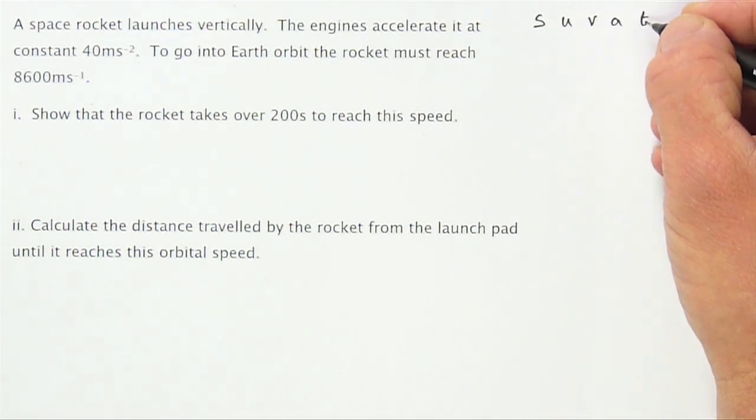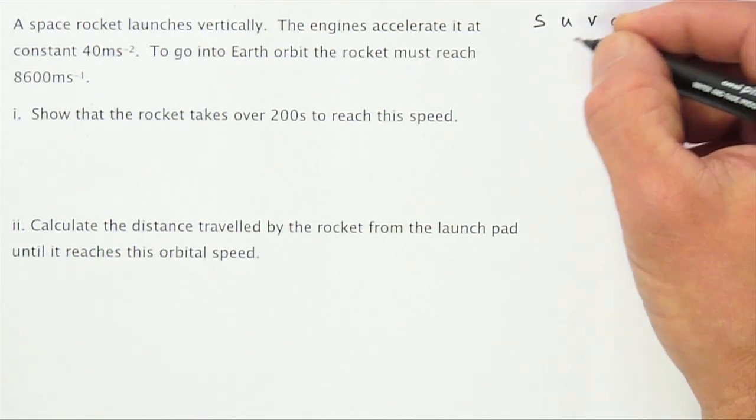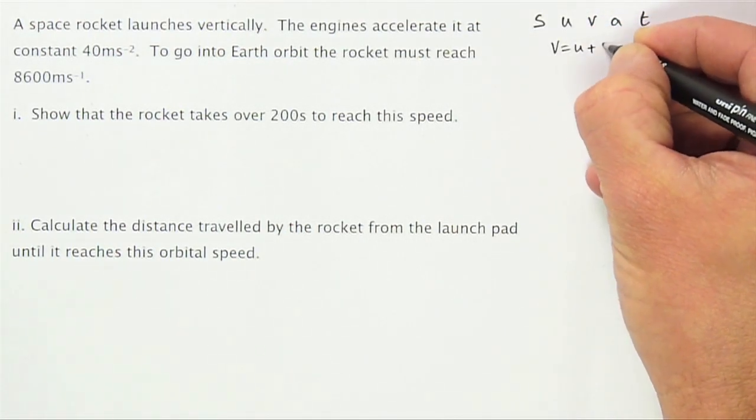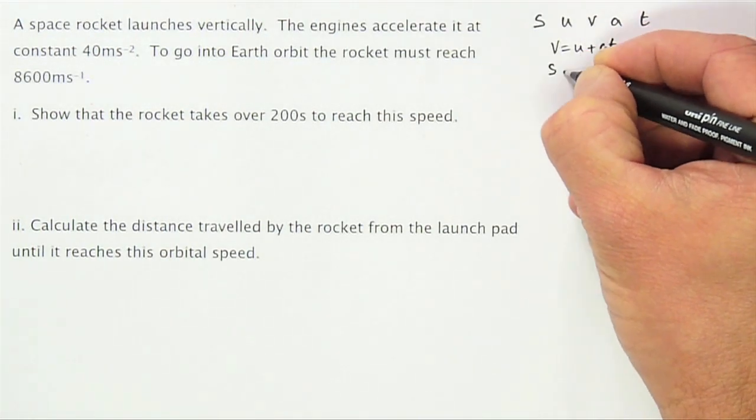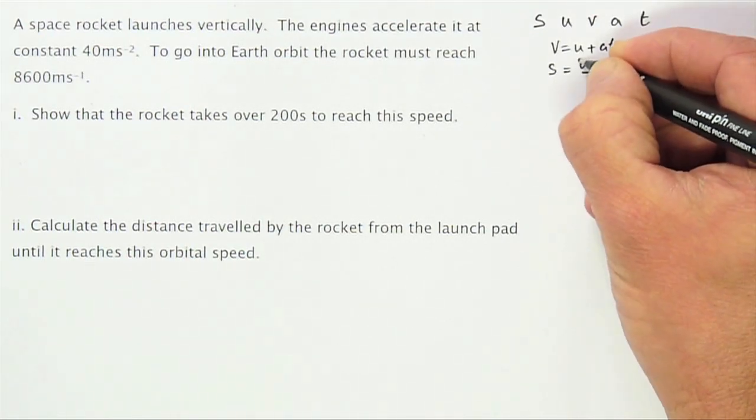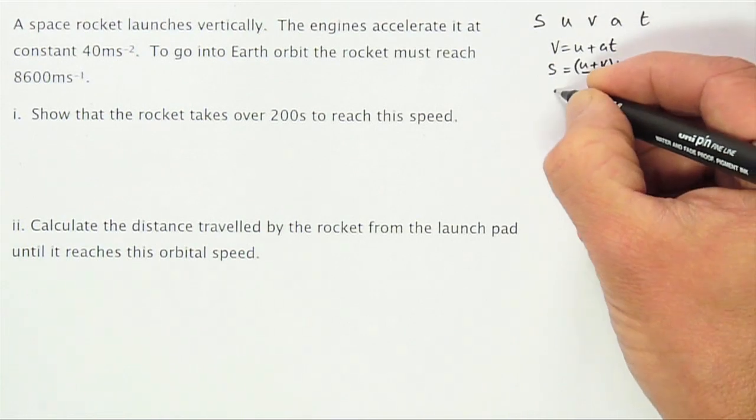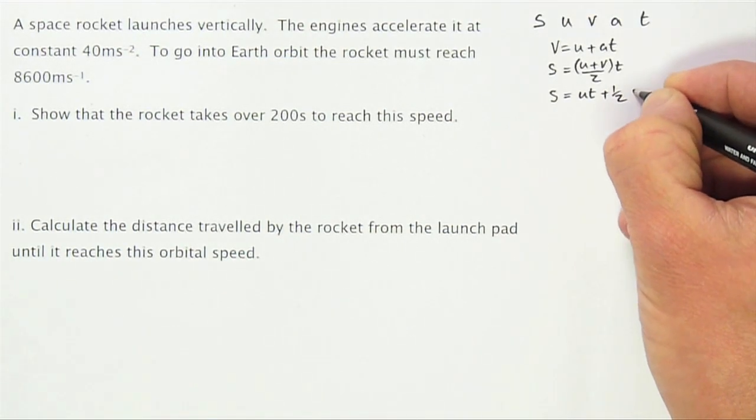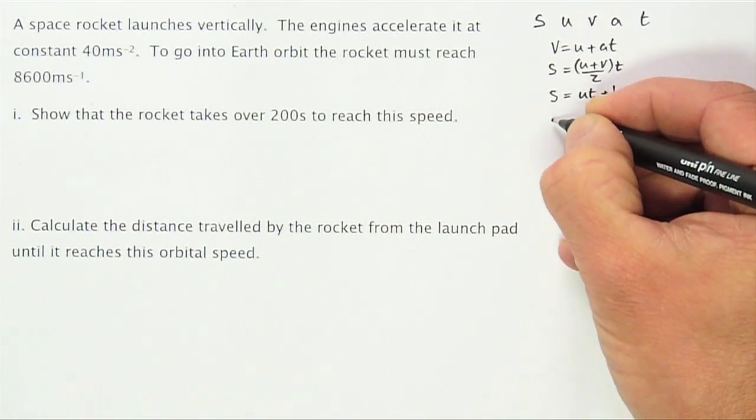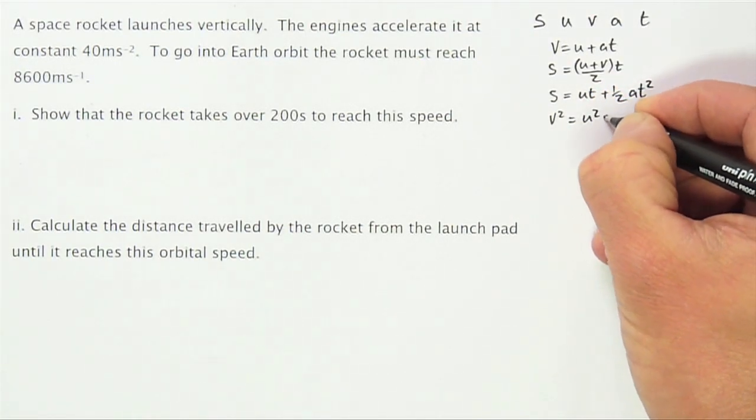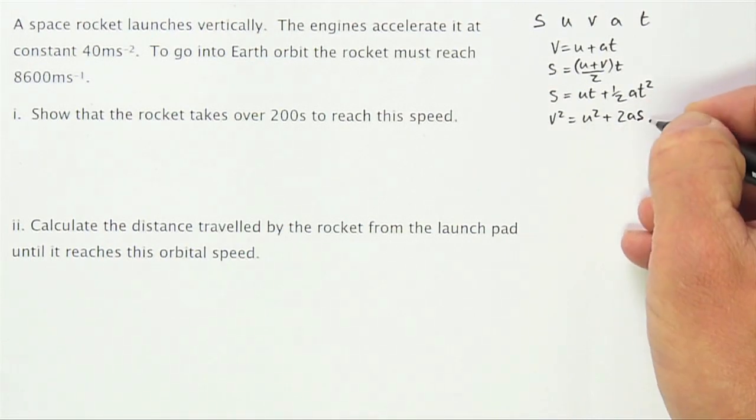Now you will be given these equations in an exam but it's really useful for you to actually learn them. I'll give them to you here. V equals U plus AT. S equals U plus V over 2 multiplied by T. S equals UT plus half AT squared. V squared equals U squared plus 2AS. Try to memorize all of those.